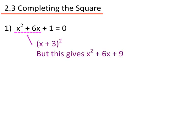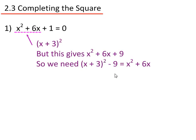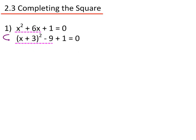Expanding x plus 3 all squared gives us x squared plus 6x plus 9, but I didn't want the plus 9, so I need to take it away. That gives me x plus 3 all squared minus 9, which will give me the x squared plus 6x I want. So x plus 3 all squared minus 9 plus 1 equals 0.